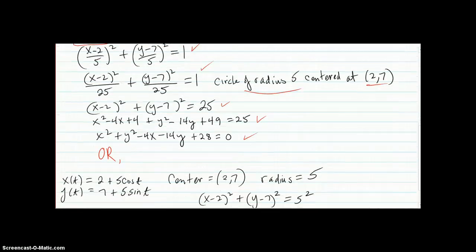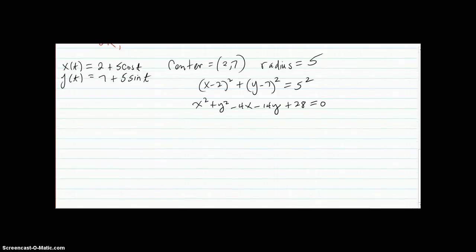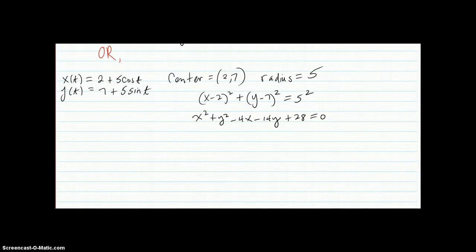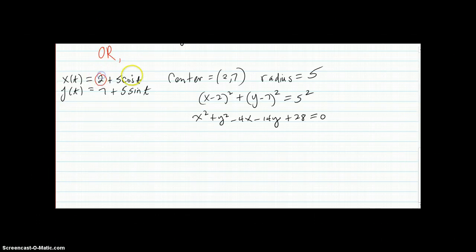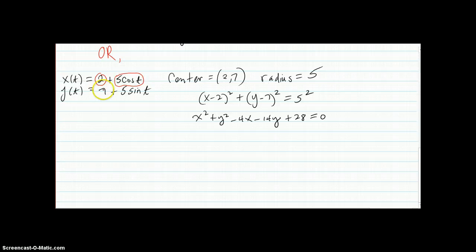Or you can do this problem by just simply realizing that you have your 2 on your x, and the x coordinate of the circle is being added onto it. And you have the 7 coordinate for the y, and the y coordinate of the circle is added onto it. So 2, 7 is the center.